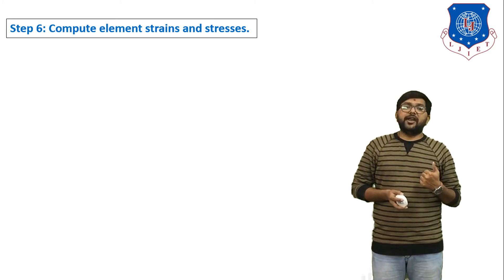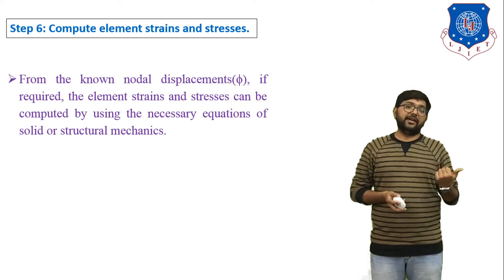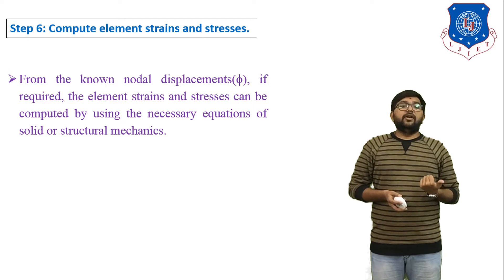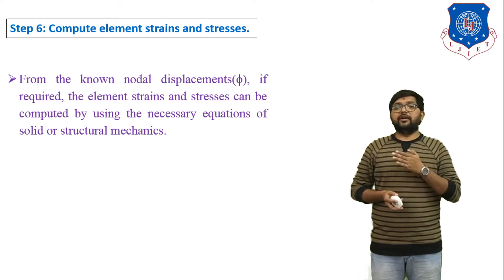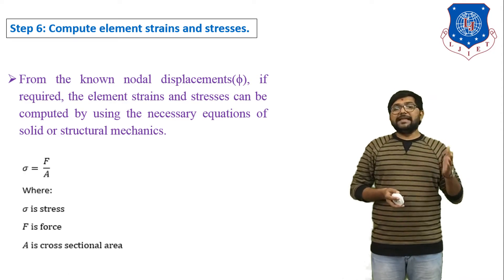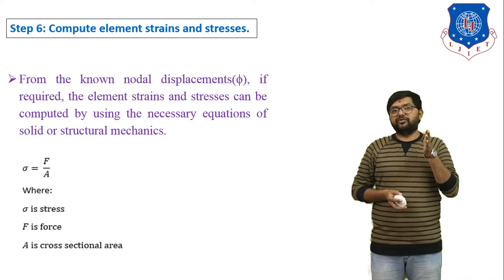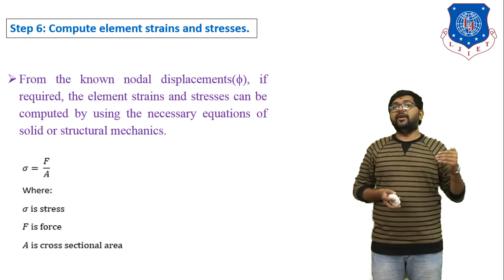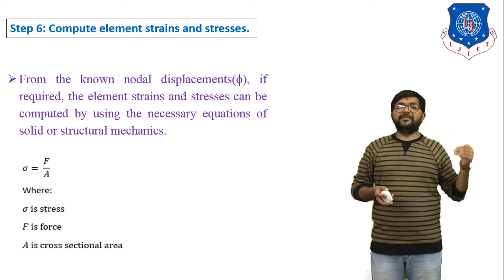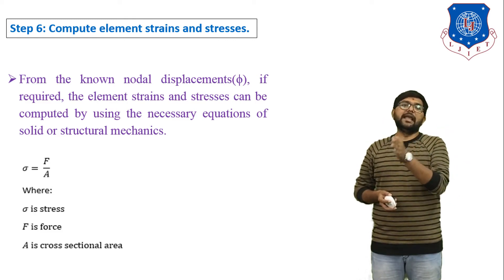Step number six: compute element strain and stress. From the nodal displacement, the element strain and stress can be computed using the necessary equations of solid or structural mechanics. Stress: sigma equals F divided by A, where sigma is stress, F is force in Newtons, and A is cross-sectional area in mm squared. Therefore, stress equals force divided by cross-sectional area, with units of N/mm².